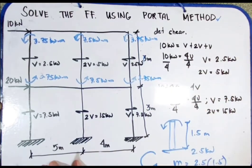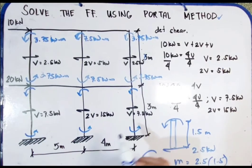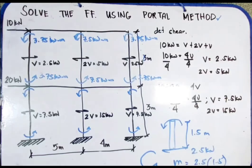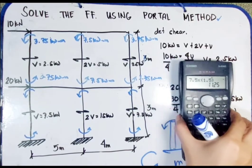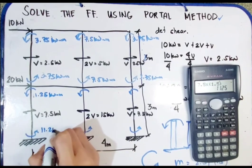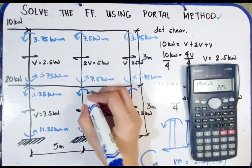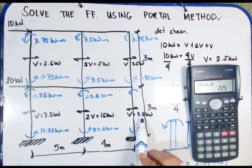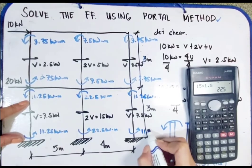For the second story column moments, we use the same process with half of 3 meters equaling 1.5 meters. The exterior column moment is 7.5 times 1.5 equals 11.25 kilonewton-meters. The interior column moment is 15 times 1.5 equals 22.5 kilonewton-meters. The other exterior column also has 11.25 kilonewton-meters by symmetry.